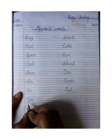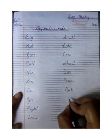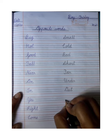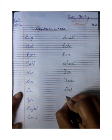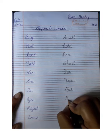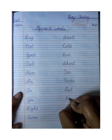Next, yes — yes yani haan. No yani nahi. So yes ka opposite? No. N-O, no.